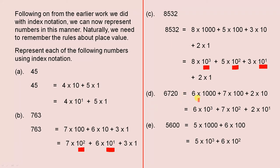6720 is 6 times 1000 plus 7 times 100 plus 2 times 10. Now here we have the zero in the ones column, that's why we can stop at 2 times 10, which is 6 times 10 cubed plus 7 times 10 squared plus 2 times 10 to the power of 1.